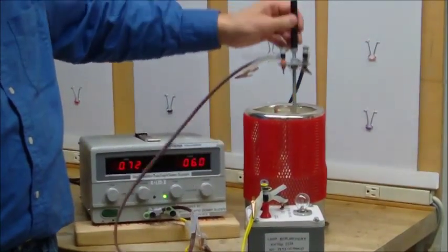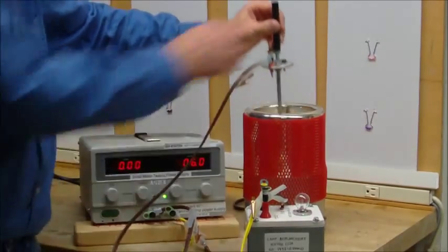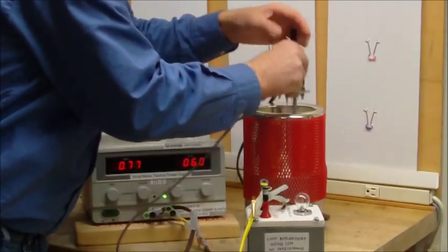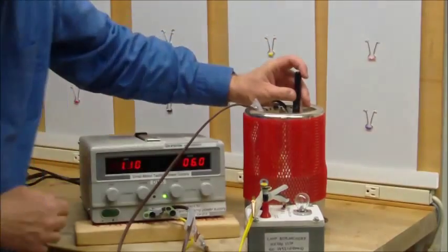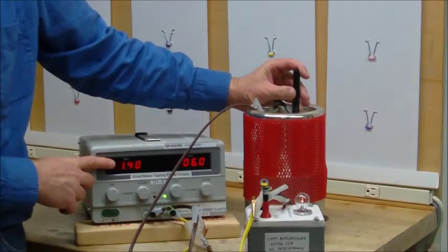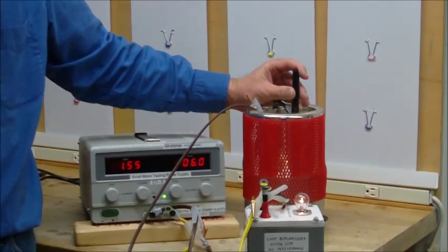Now, when we go ahead and insert that into the liquid nitrogen, the temperature will start to drop. And as the temperature starts to drop, the resistance drops, and thus the current goes up. And as the current goes up, the light bulb, of course, gets brighter and brighter.